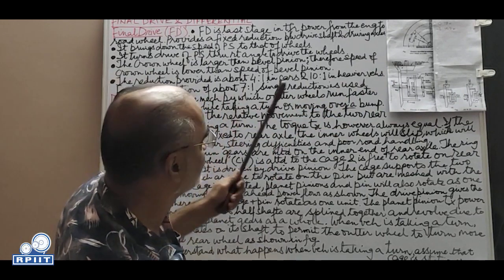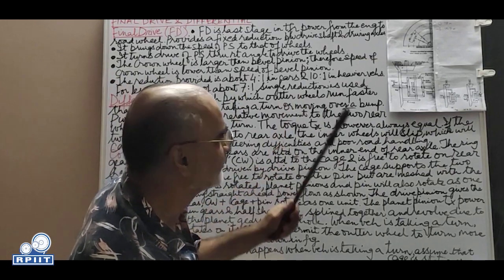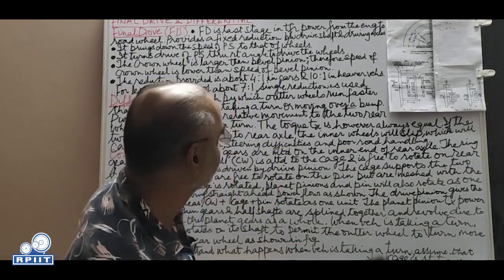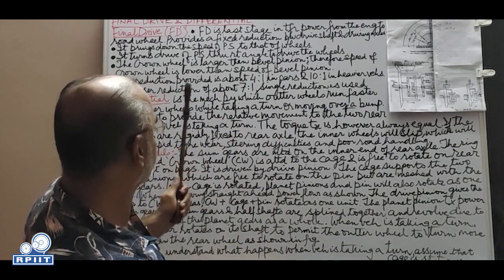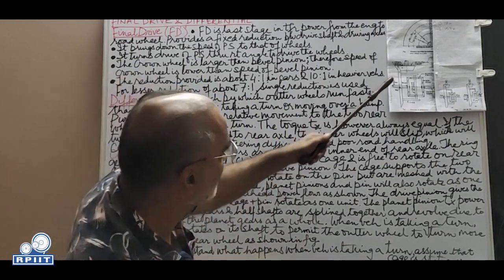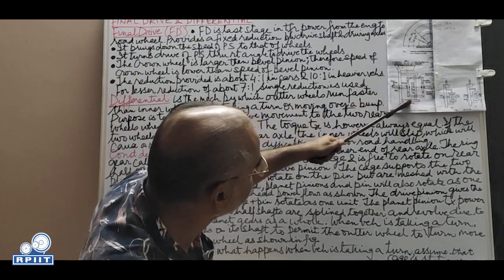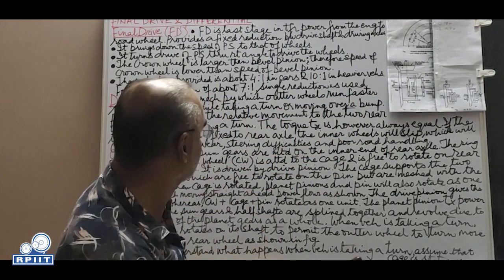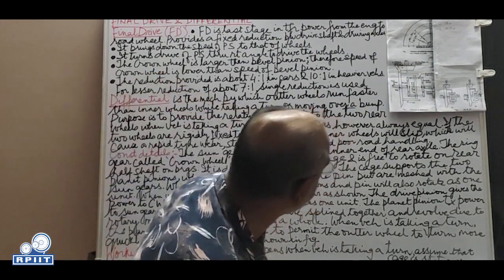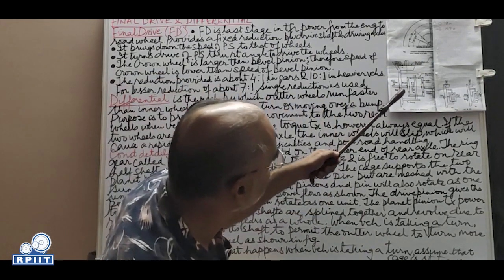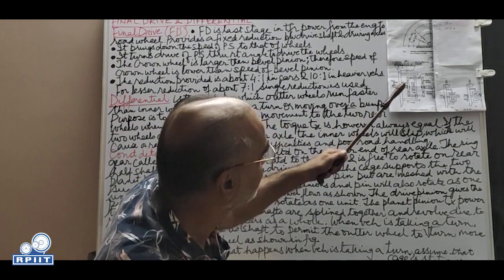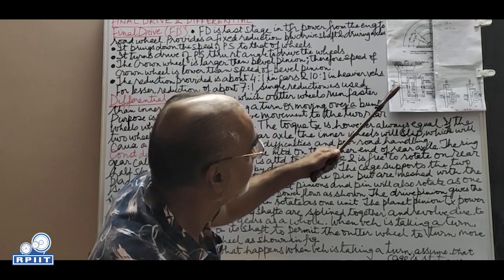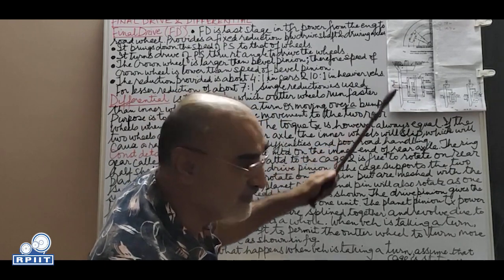For reductions up to about 7:1, a single reduction stage is used. Beyond that, a second reduction stage is required. Now we come to the differential. The differential is a mechanism by which the outer wheel turns faster than the inner wheel.